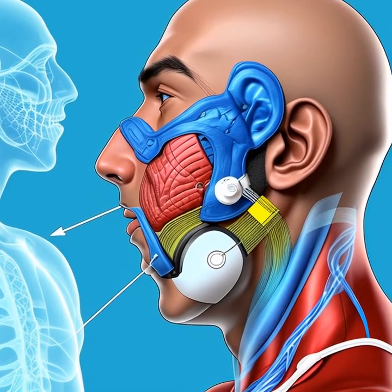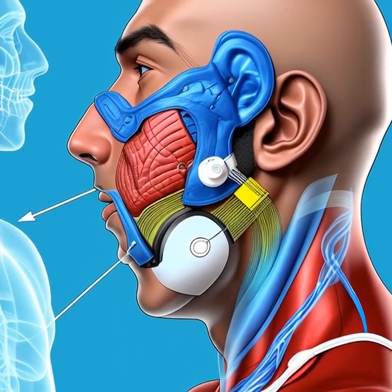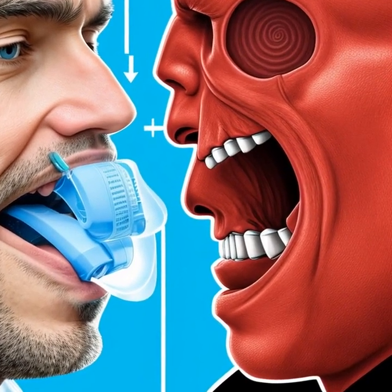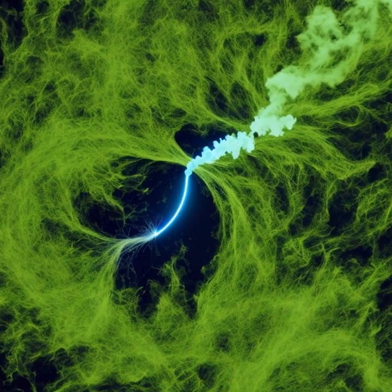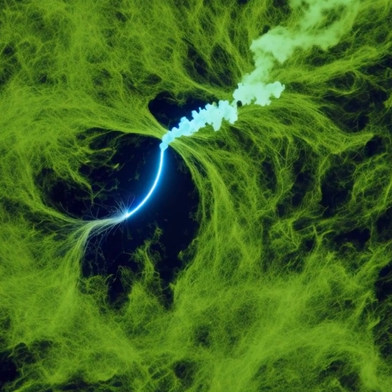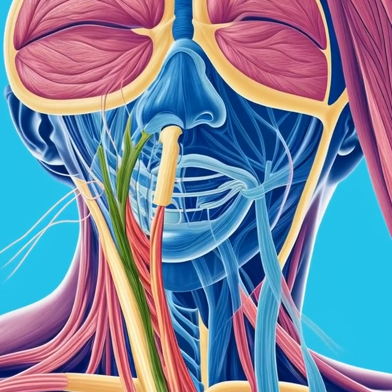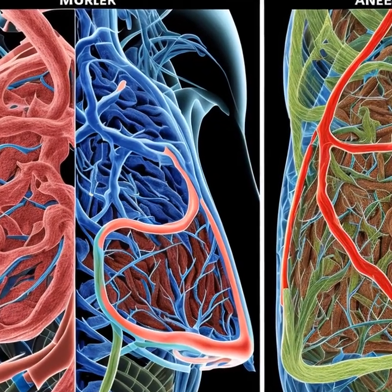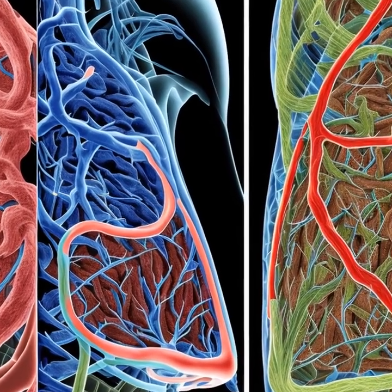Inflammation is a key player in asthma. When the airways become inflamed, they swell and produce more mucus, which can cause the airways to become narrower. This inflammation is caused by various triggers such as allergens, irritants, or infections. In response to these triggers, the body releases inflammatory mediators like histamine and leukotrienes, which contribute to the inflammation and swelling of the airways.